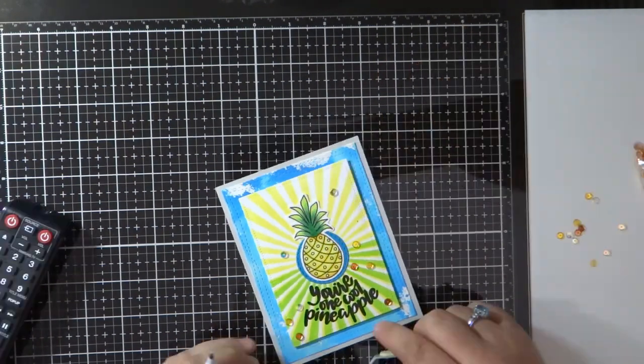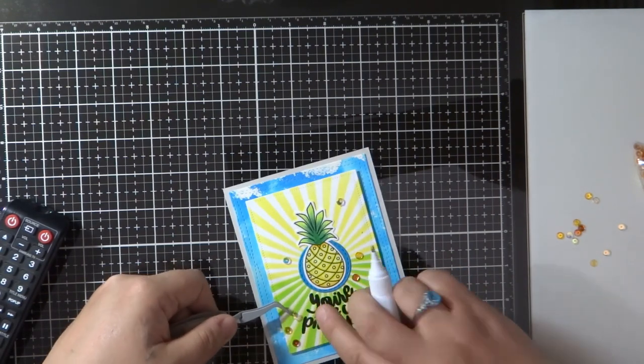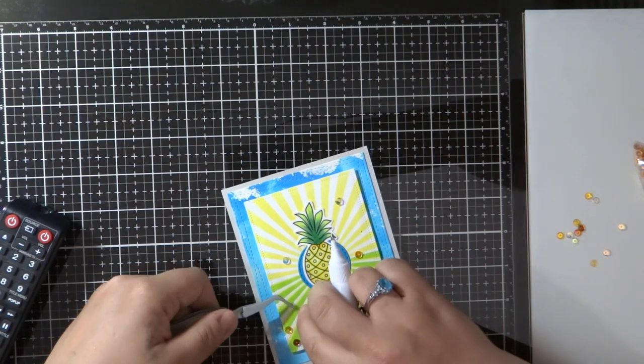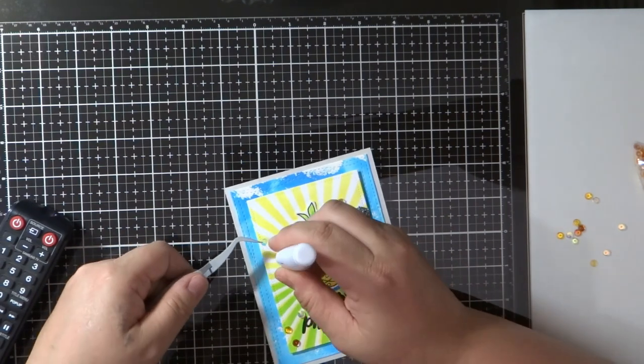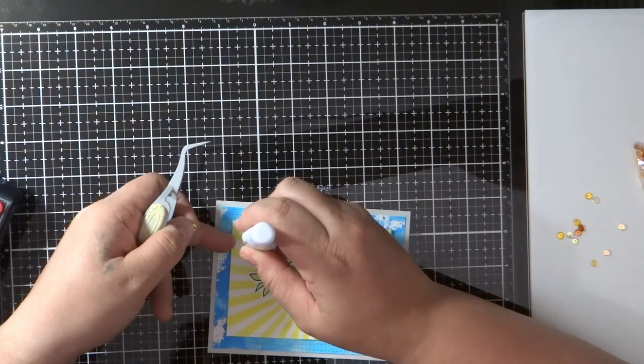And then I'm going to add the sequins. Sorry, my remote got in the way. I didn't realize that was there, but just ignore that. And these sequins did come with the Simon Says Stamp monthly card kit also.